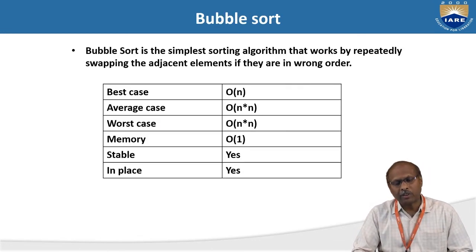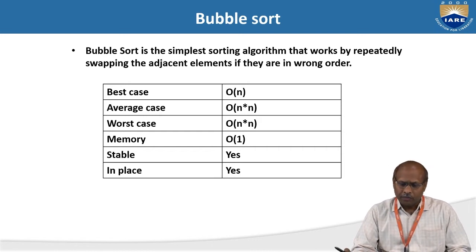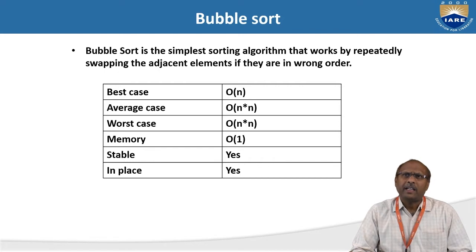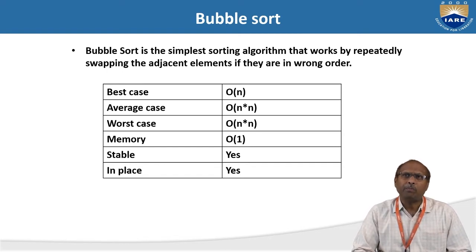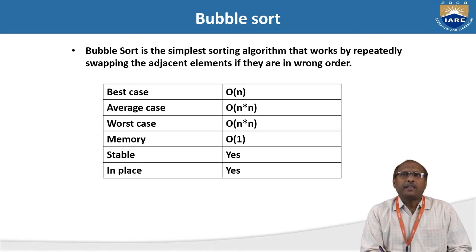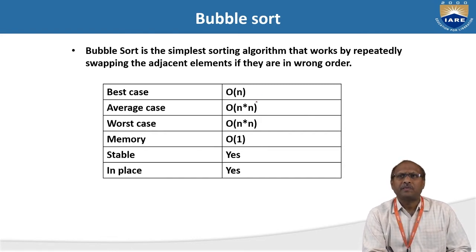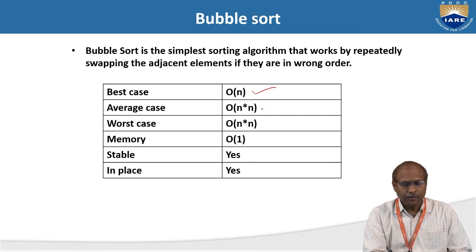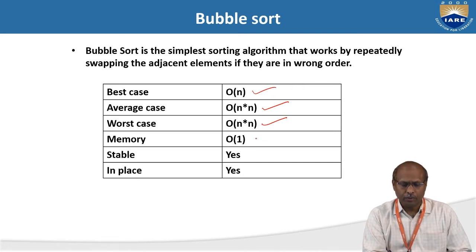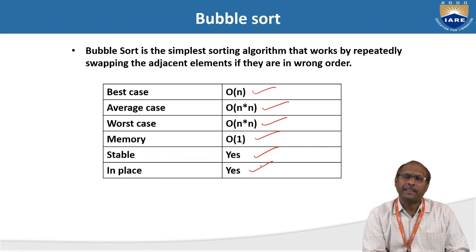Bubble Sort is one of the simplest sorting algorithms that works well if there is a limited set of data, and it is performed by swapping adjacent elements. Bubble Sort will swap the adjacent elements until it gets the proper order. The best case time complexity is O(N), average case is O(N²), worst case is O(N²), and memory required is O(1). It is stable and sorts in place.